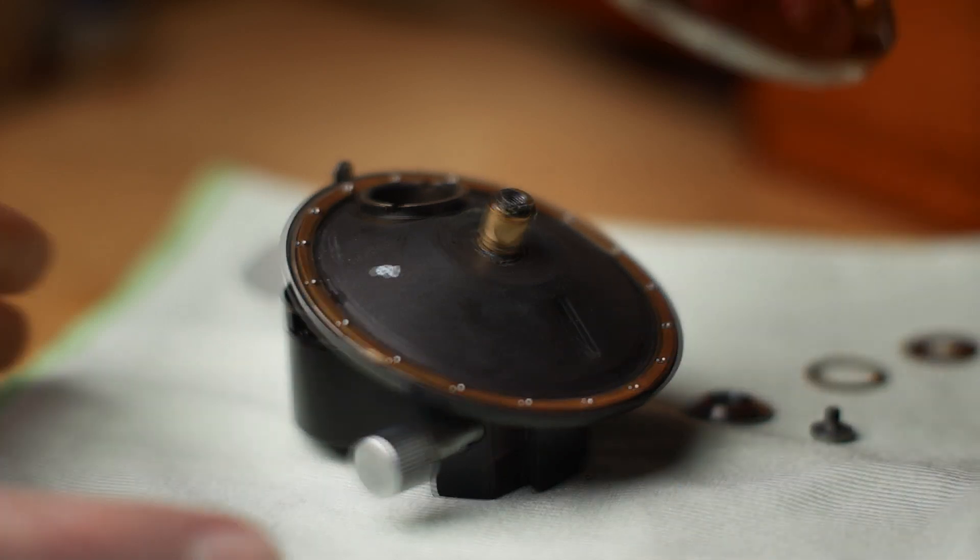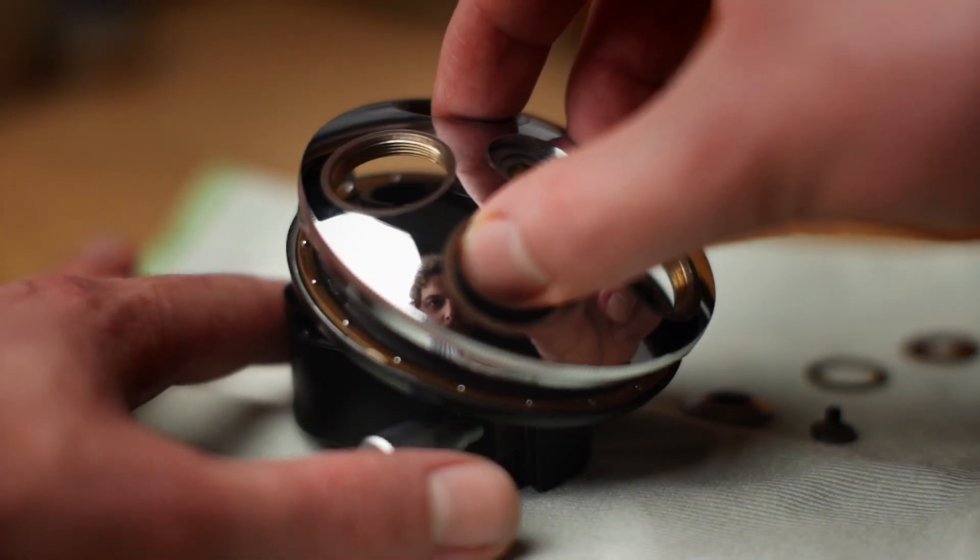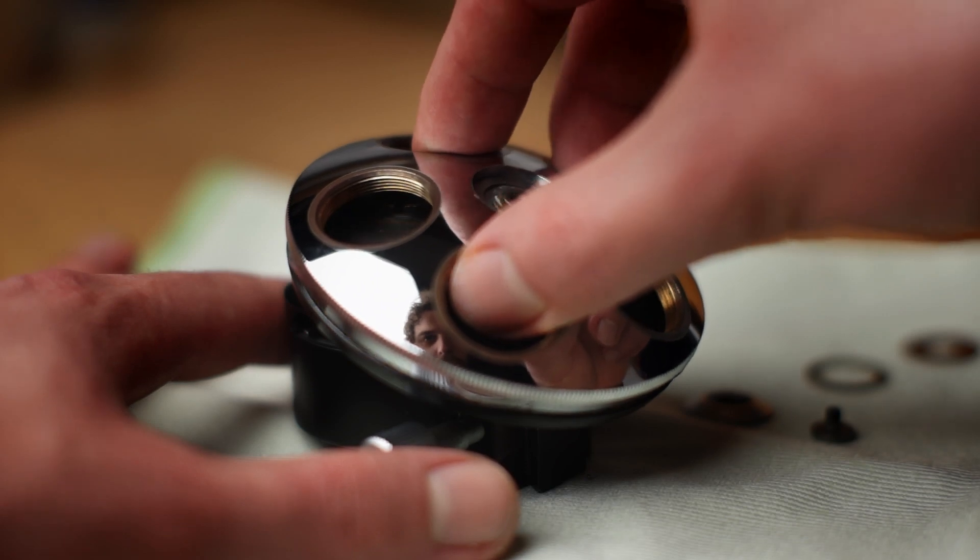With the upper bearing race and central plain bearing also lubricated, the rotating part of the turret is then replaced.